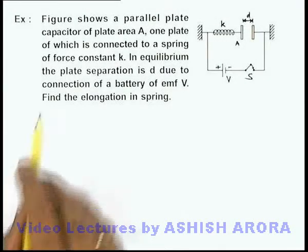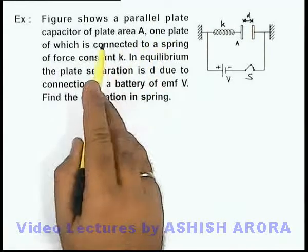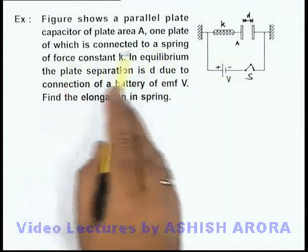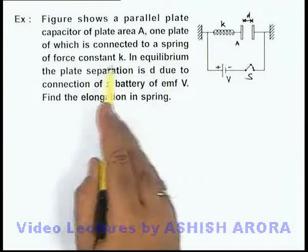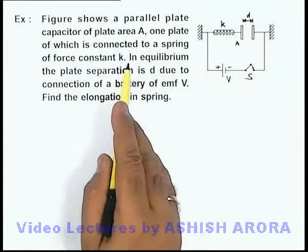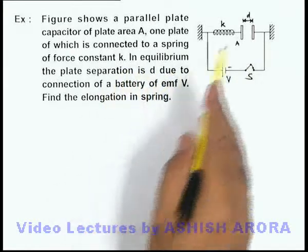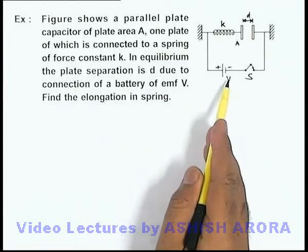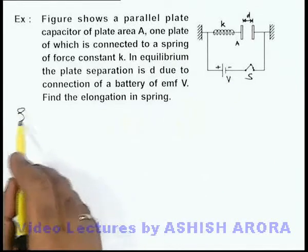In this example, this figure shows a parallel plate capacitor of plate area A. One plate is connected to a spring of force constant k, and another plate is rigidly fixed with a wall. In equilibrium, the plate separation is d due to the connection of a battery of emf V, and we are required to find the elongation in the spring.